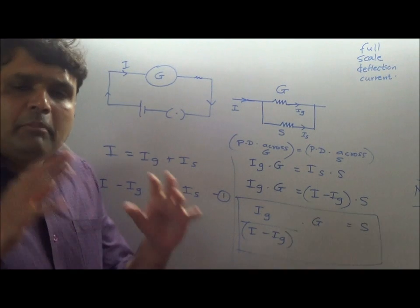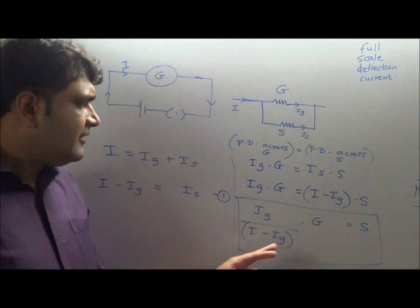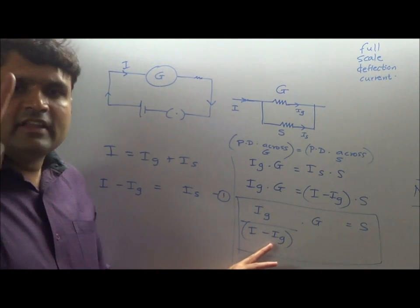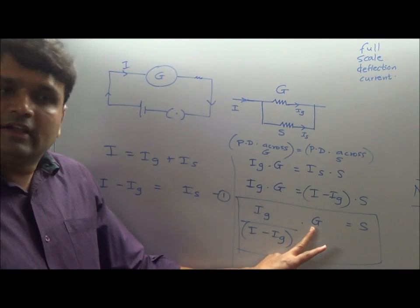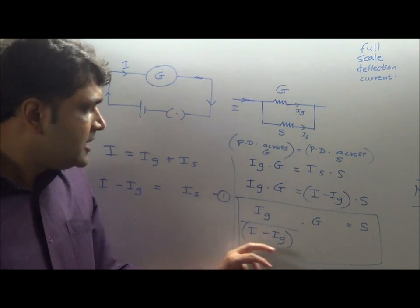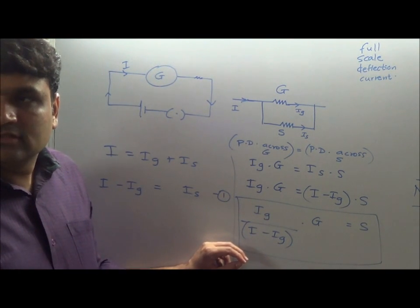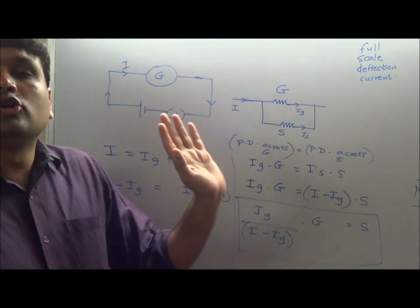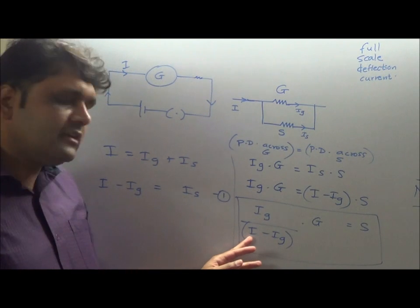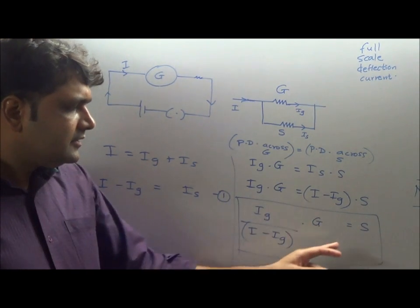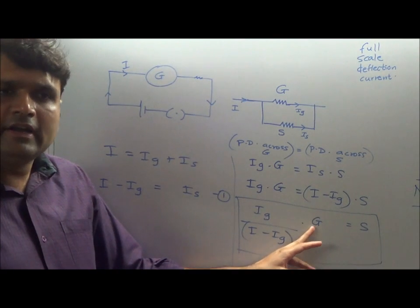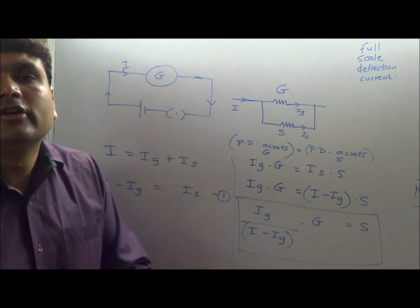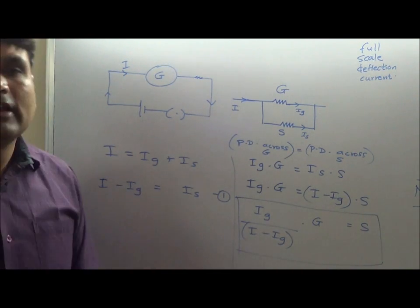For a particular galvanometer, I_G is fixed. Say the full-scale deflection current is 3 amperes and the galvanometer resistance G is 10 ohm — both fixed. If I want to measure 20 amperes, I substitute I = 20 and calculate the required shunt, then connect it in parallel with the galvanometer coil. If I want to measure 50 amperes, I substitute 50 amperes, use the same I_G and G, calculate the new shunt value, and the galvanometer becomes an ammeter for that range.